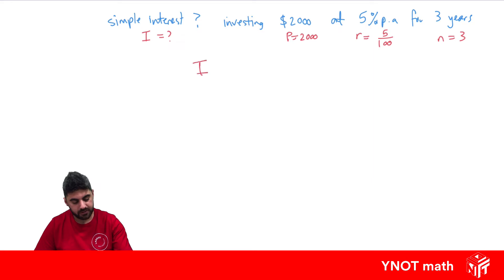So we can use our formula to find simple interest. I equals P times R times n. Interest we want to find, we know the principal is equal to 2,000, our rate as a decimal is 5 over 100, and our time period's 3. You can put all that into the calculator and you'll get $300 of interest earned over those three years.